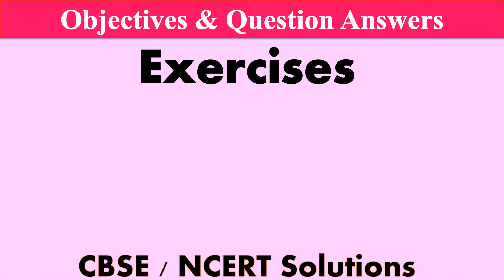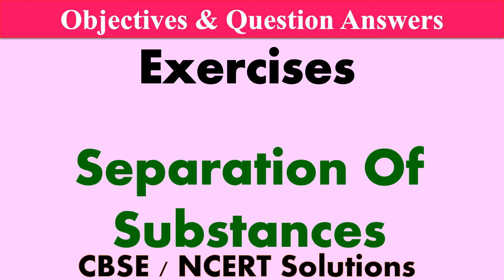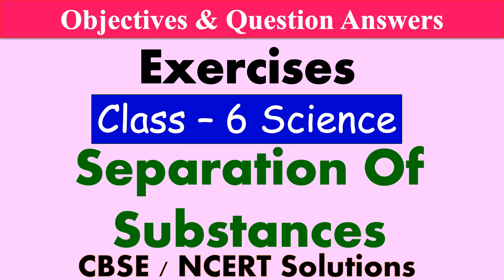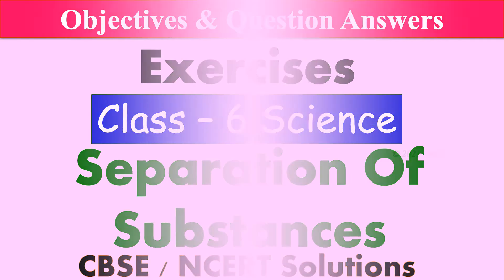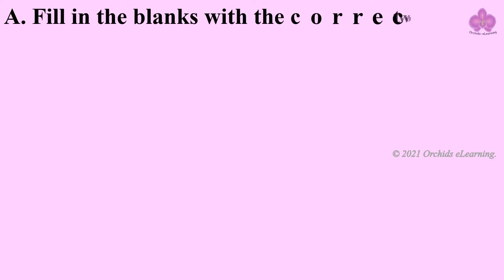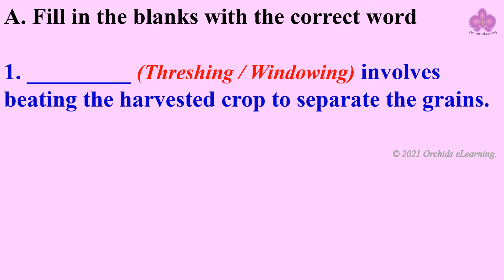Objectives and question answers of the lesson: Separation of Substances, Class 6 Science. Fill in the blanks with the correct word: dash involves beating the harvested crop to separate the grains. Answer: threshing.